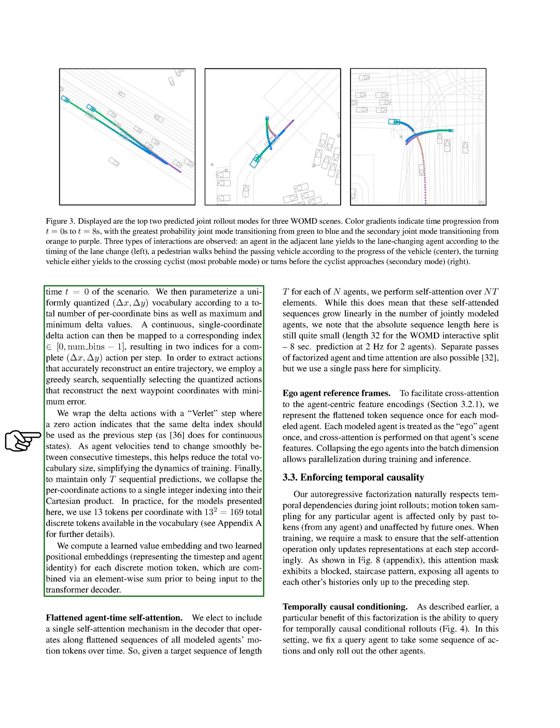Finally, we compute a learned value embedding and two learned positional embeddings for each discrete motion token. These are combined via an element-wise sum before being input to the transformer decoder. We include a single self-attention mechanism in the decoder that operates along flattened sequences of all modeled agents' motion tokens over time. This means that these self-attended sequences grow linearly in the number of jointly modeled agents, but the absolute sequence length here is still quite small.